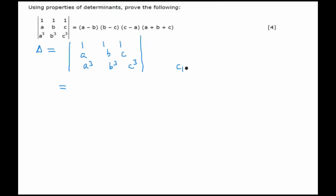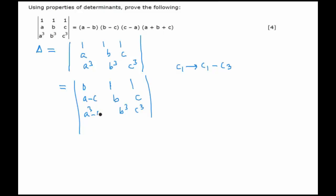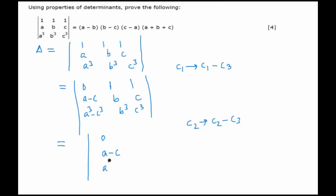Let's apply C1 → C1 - C3. This gives us 0 in the first row, (b - c) and (b³ - c³) in the second column, and (a - c) and (a³ - c³) in the first column, with the third column [1, c, c³] remaining as is. We do the same for column 2: C2 → C2 - C3, giving 0, (b - c), (b³ - c³) in column 2.